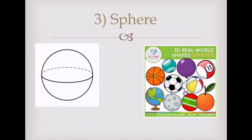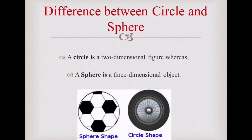First, let's figure out what is the difference between a sphere and a circle. A circle is a two-dimensional figure, whereas a sphere is a three-dimensional object. This is the difference between a circle and a sphere.